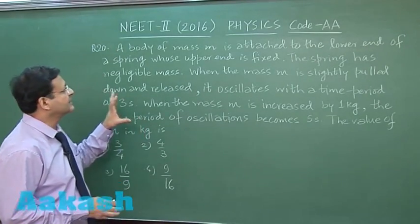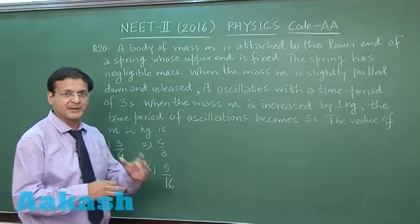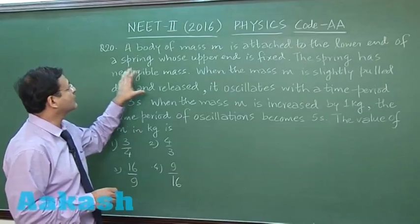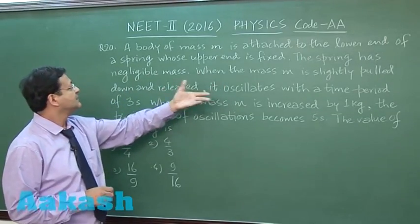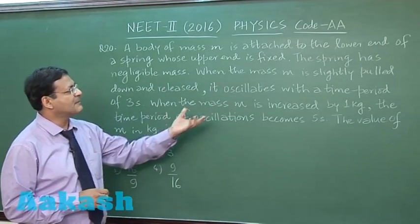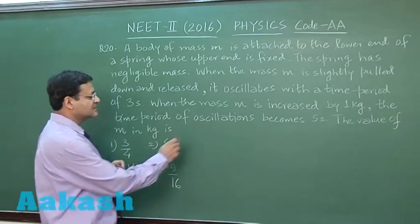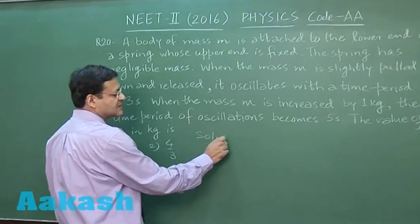Now this question 20 is based on simple harmonic motion, a spring mass system. It says that a body of mass M is attached to the lower end of a spring whose upper end is fixed. The spring has negligible mass. When the mass M is slightly pulled down and released, it oscillates with a time period of 3 seconds.